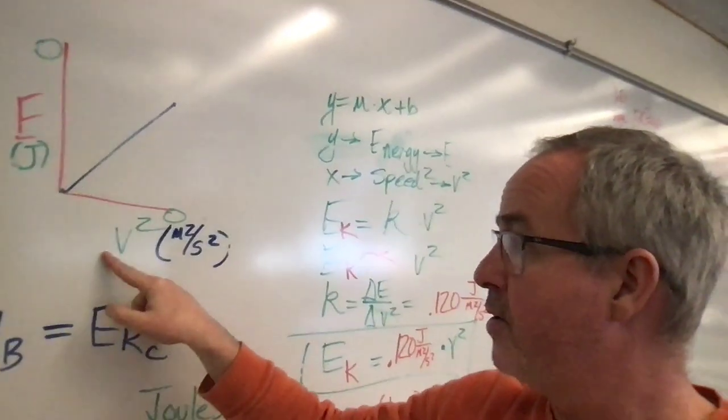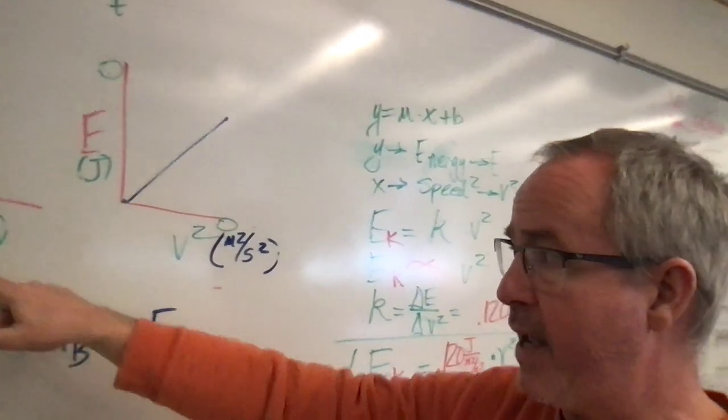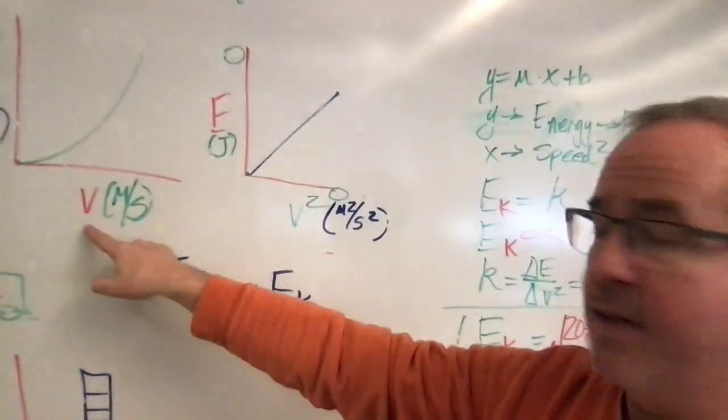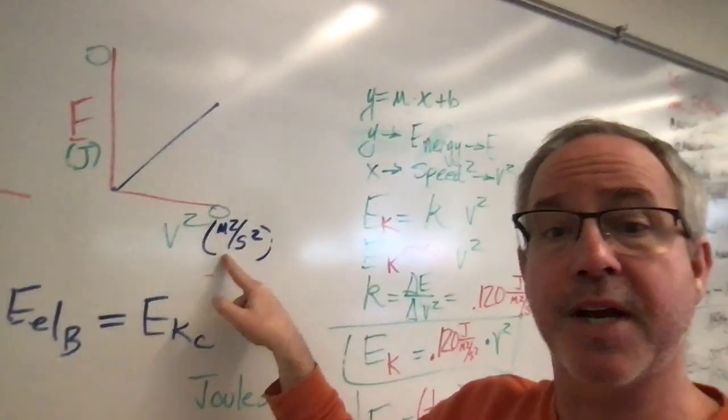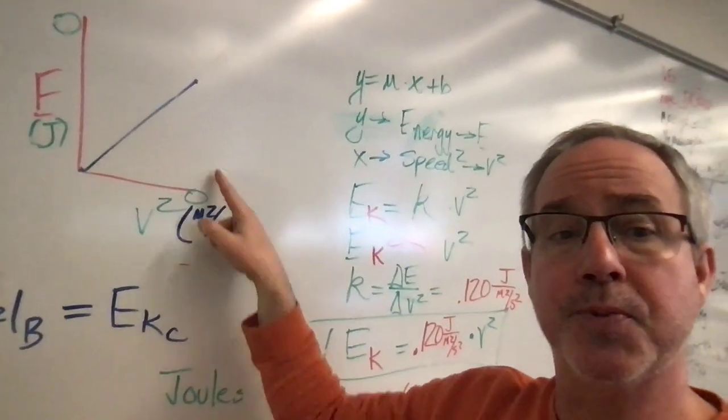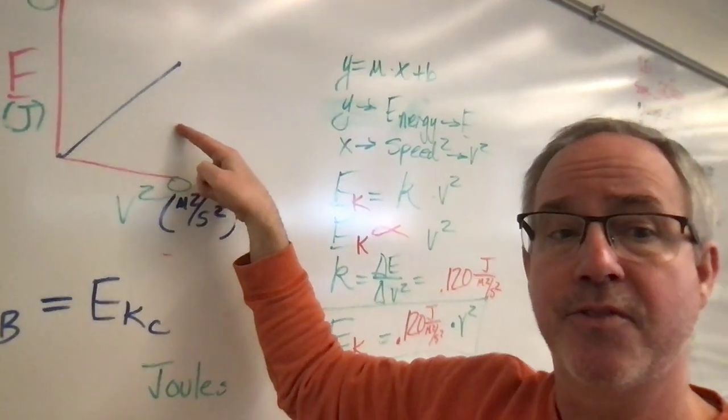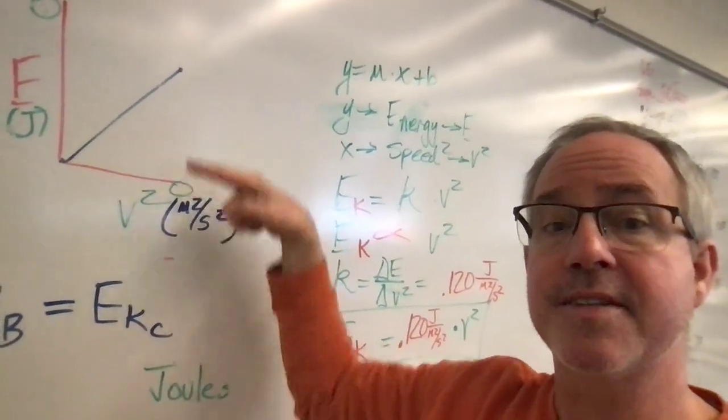We noted that in order to square the speed we had to do speed times speed, so that's speed squared, and meters per second times meters per second would be meters squared per second squared. At that point we were supposed to make a mathematical analysis for this linearized graph last night.